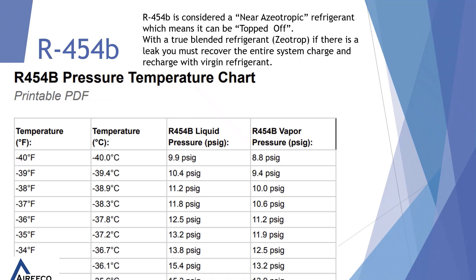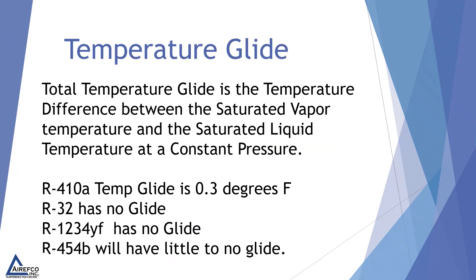Some preliminary charts released for R454B show a liquid pressure and a vapor pressure column, but R454B is considered a near-azeotropic refrigerant, meaning it can be topped off like R410A. With a true blended zeotrope refrigerant, if there is a leak you must recover the entire charge and recharge with virgin refrigerant. Total temperature glide is defined as the temperature difference between the saturated vapor temperature and the saturated liquid temperature at a constant pressure.